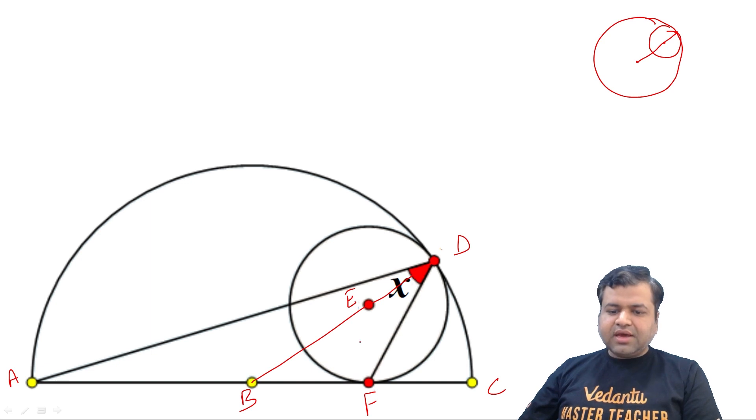Now, second thing: BC is clearly a tangent at F. So the center, if we get this angle, this angle is clearly 90 degrees. This is all you know.